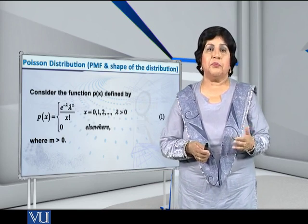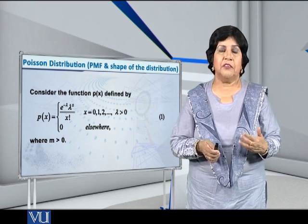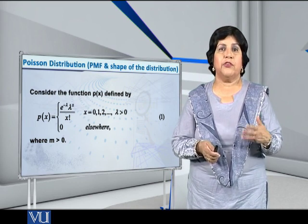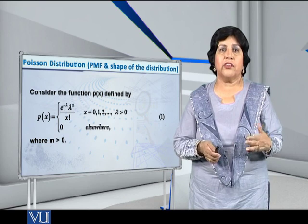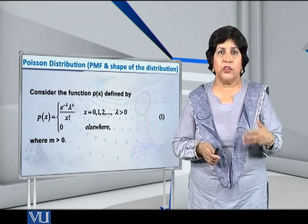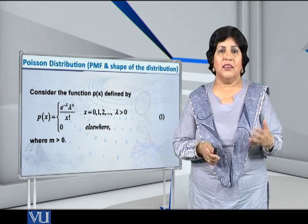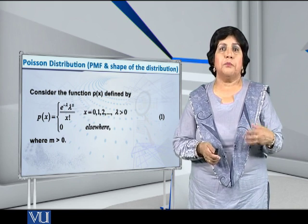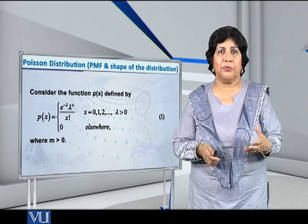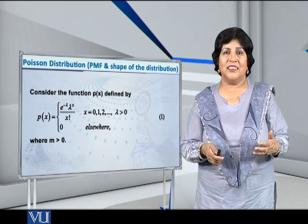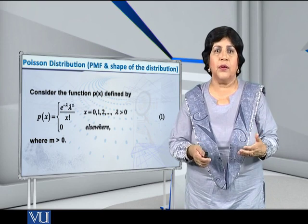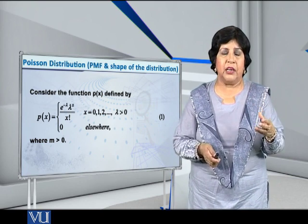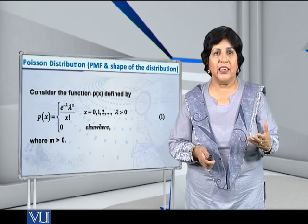Let us consider the PMF given by the formula: e raised to minus lambda, multiplied by lambda raised to x, over x factorial, where x is equal to 0, 1, 2, and so on, and lambda, the parameter, is greater than zero. We also write that P(x) is equal to zero elsewhere.